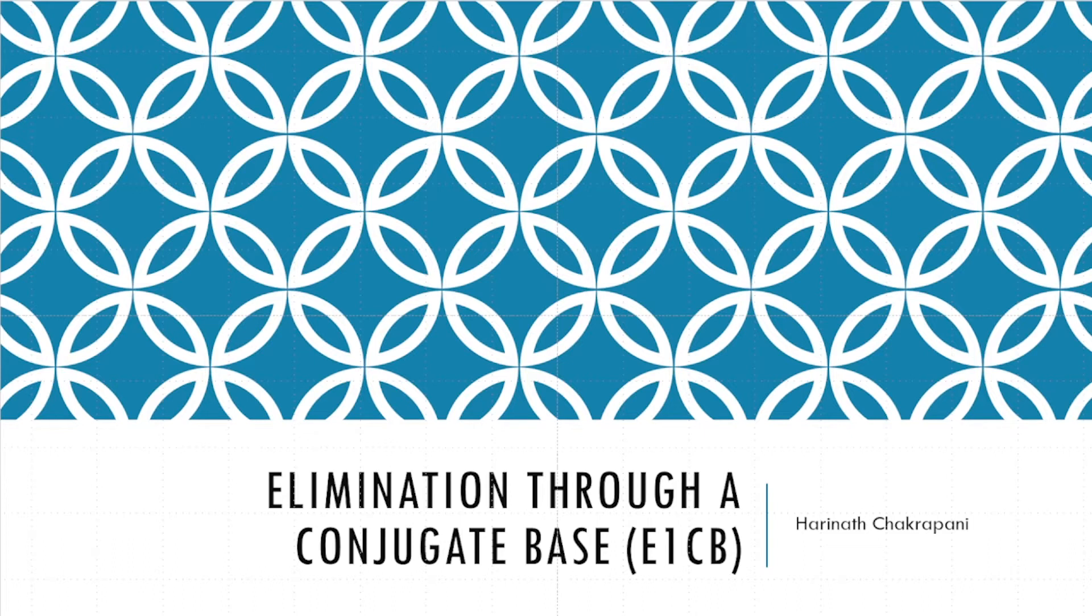You already have a good idea about the two major mechanisms for elimination reactions. The first one is E1, where you have a system like this and you have the loss of bromide, or you could also have OH2 plus which can be lost. This is going to be lost and you are going to produce a carbocation.